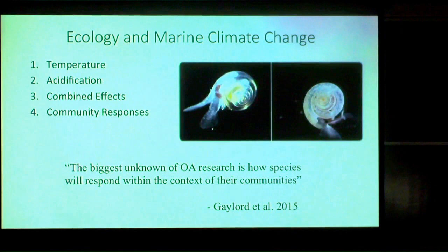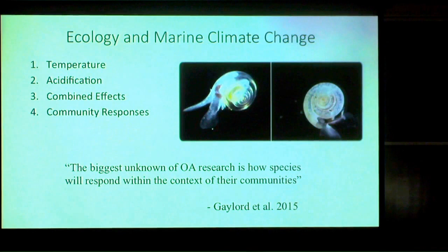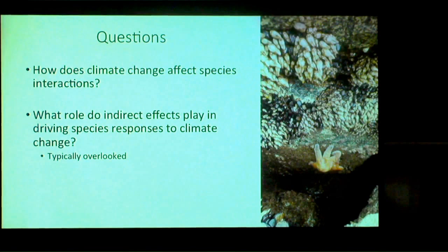If we know how sea star larvae respond to ocean acidification, that's really useful, but it's hard to make predictions about how that's going to affect the ecosystem and mussels and other organisms based on just one species. One of the biggest challenges — not just for ocean acidification research, but for climate change research — is taking into account species interactions and looking at community-level effects.